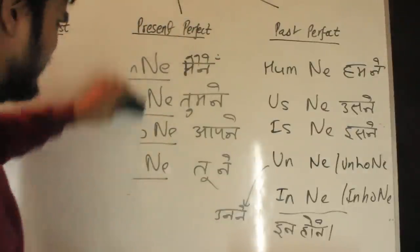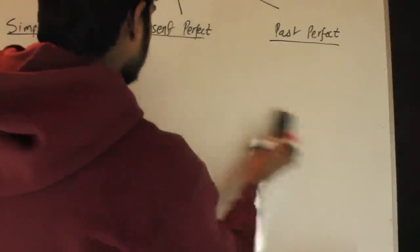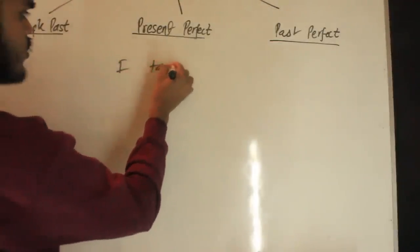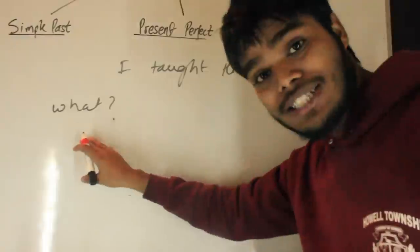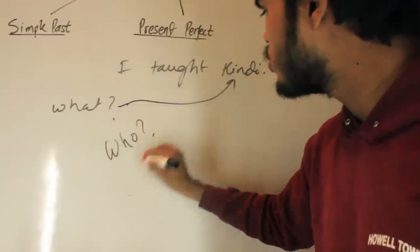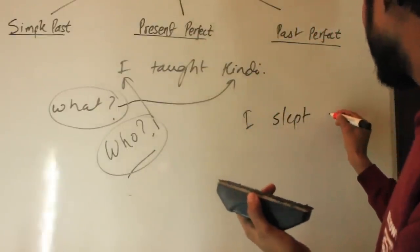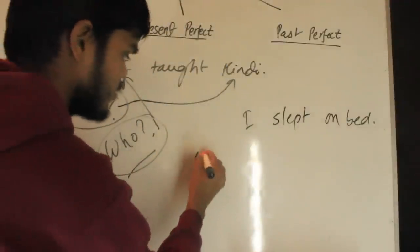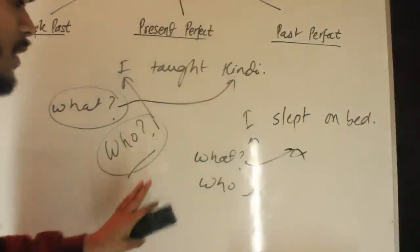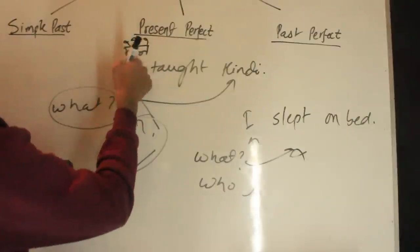Let me give you more examples to figure out whether a sentence takes Ne or not. 'I taught Hindi' — ask 'what?' I taught Hindi — yes, I have the answer. 'Who taught?' I taught — yes, I have both answers, so it takes Ne. Another example: 'I slept on the bed.' Ask 'what?' — no answer. 'Who?' — yes. Since we don't have both answers, 'sleep' is intransitive and will not take Ne. The sentence 'I cooked' with Ne becomes 'maine,' while 'I slept' does not use Ne.